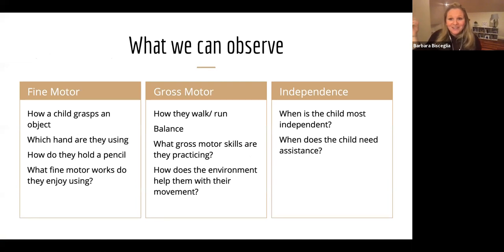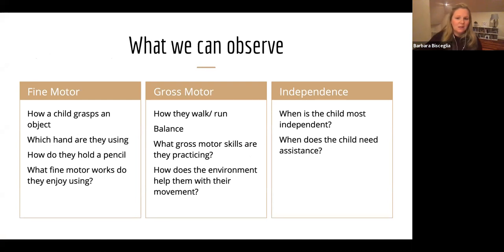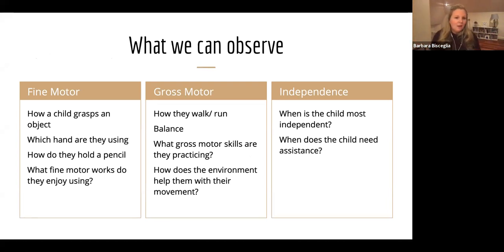Going back to those skill sets, we have fine motor. If you're observing fine motor, you'll be looking at how a child is grasping objects, which hand they're using, how they're holding a pencil, and what fine motor works they enjoy. That information will help feed into what you do next — maybe you'll add something in, or maybe a work is a little too challenging for them.